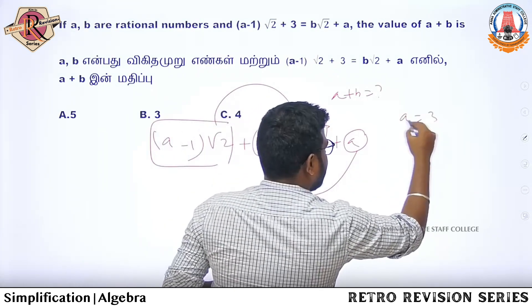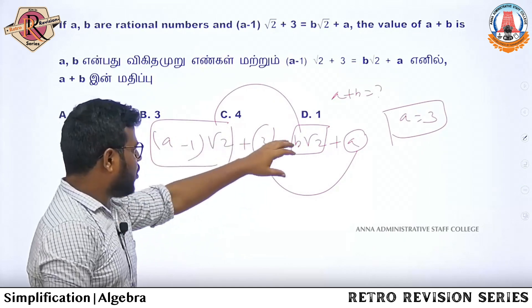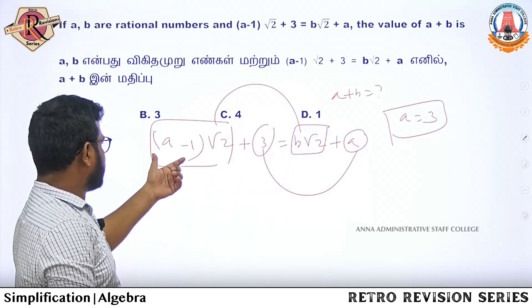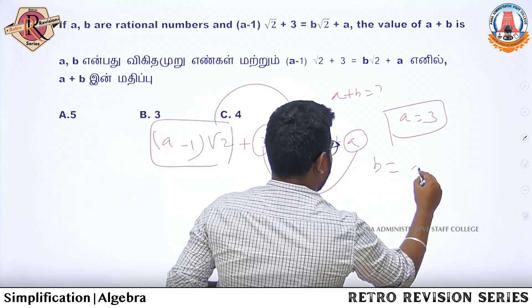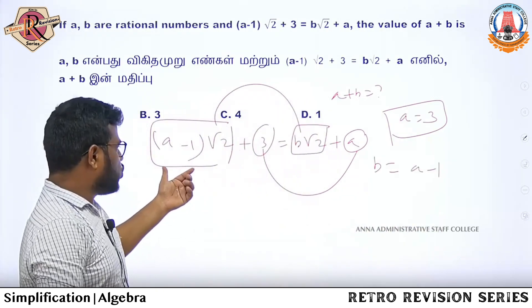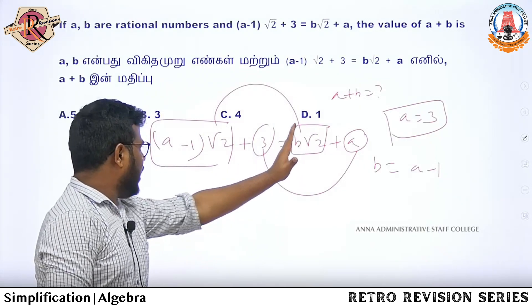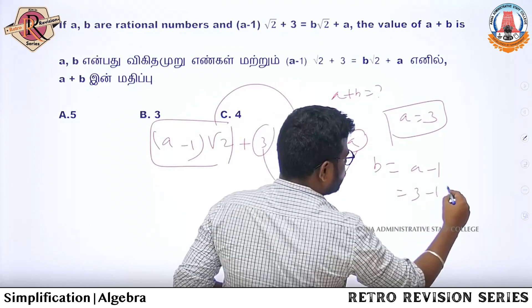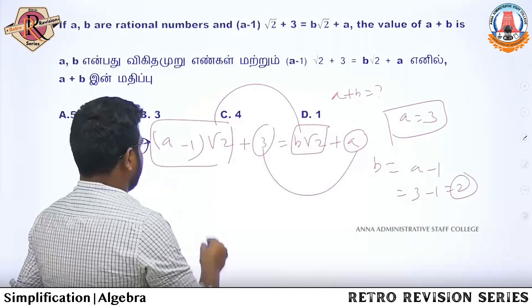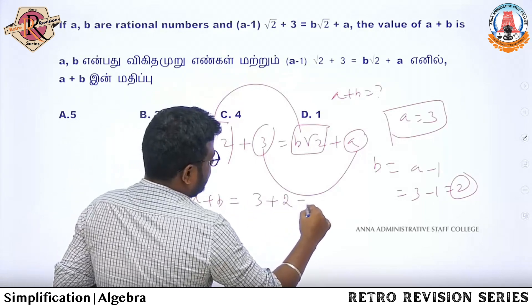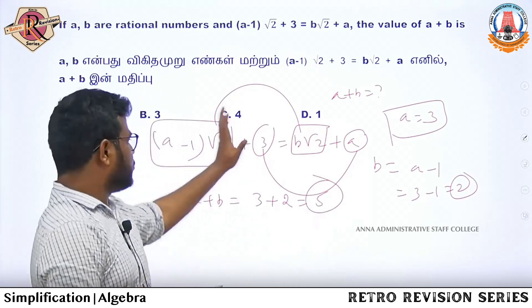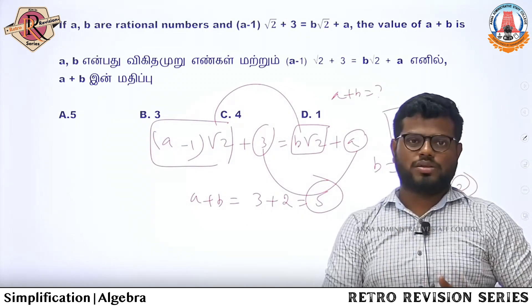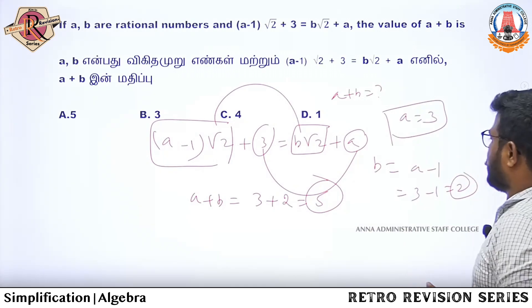So what do we do? A is 3. Comparing coefficients: b root 2 is a minus 1 root 2, so b equals a minus 1. And the rational part: a equals 3. So b equals 3 minus 1 equals 2. Then a plus b equals 3 plus 2 equals 5. Question number 4 answer is option A, a + b = 5.